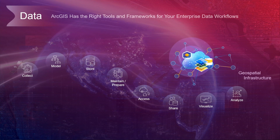ArcGIS has the right tools and frameworks tuned for your enterprise data workflow needs. For example, you can use mobile apps like ArcGIS Field Maps, or fly drones to collect data, and then process them within Drone2Map or Site Scan. You can use ArcGIS Pro to model the world and its infrastructures like utility networks, roads, parcels, and buildings. ArcGIS comes with built-in connectivity to a wide range of data stores, tools to help you prepare your data and provide the right level of access through feature layer views. And there's data that's optimized for further visualization and analysis — key to delivering analysis-ready data.